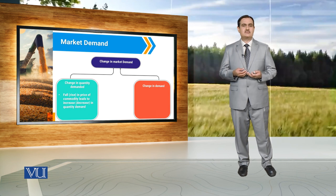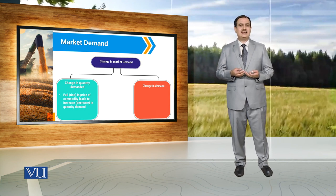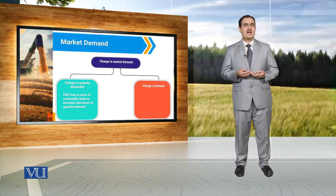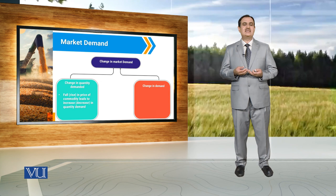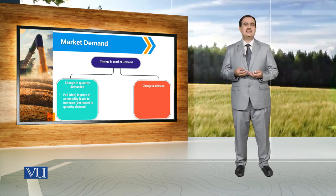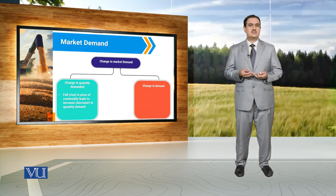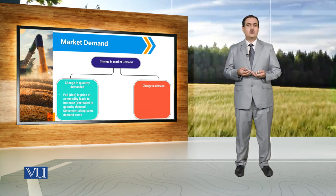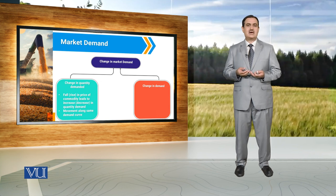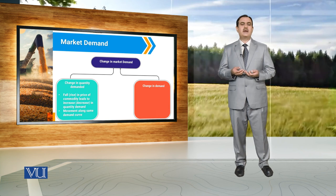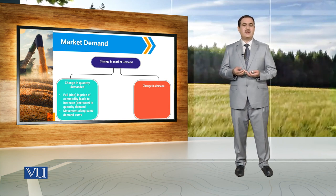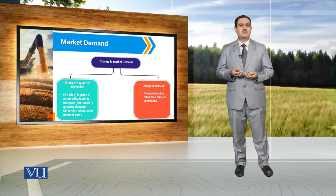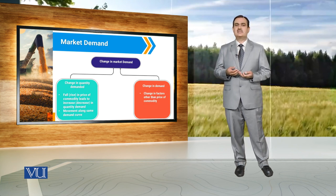If price of a commodity increases, then there is a decrease in quantity demand. And if there is an increase in price of the commodity, there is a decrease in quantity demand of apples. This movement along the demand curve is called change in quantity demand. But it might be possible there is a change in factors other than price in a particular market. When there is a change in factors other than price, again there is change in demand — and this is called change in demand.